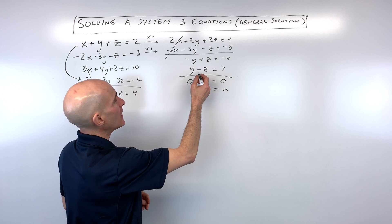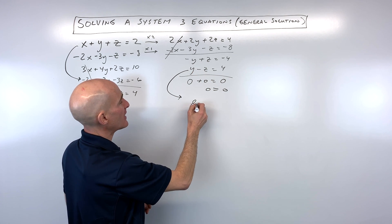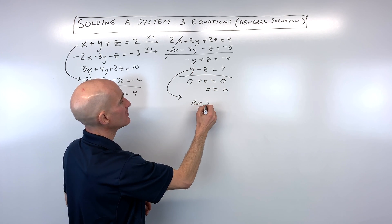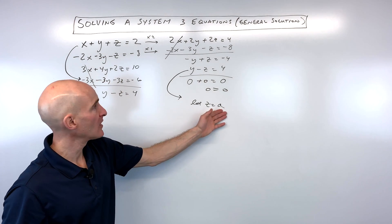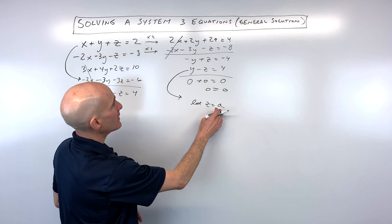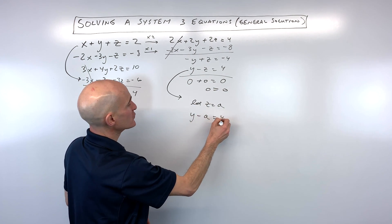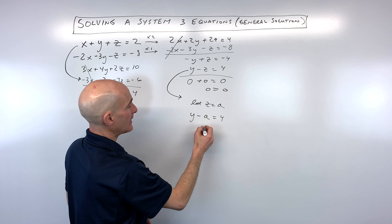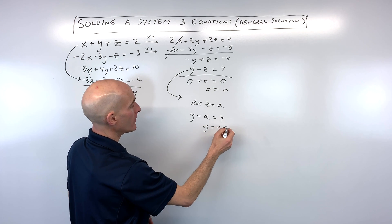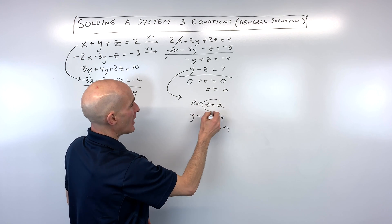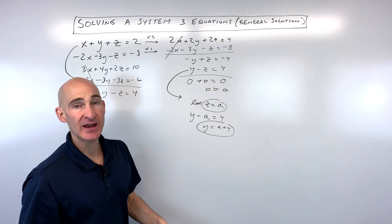We'll take the bottom equation and say let z equal some quantity a. Substituting a in for z, we get y minus a equals four. Adding a to both sides gives y equals a plus four. Now we know what z is in terms of a and what y is in terms of a.